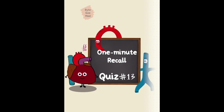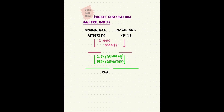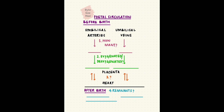This next one is on fetal blood vessels. During fetal life, there are umbilical arteries and veins. Your task is to recall how many umbilical arteries there are and how many umbilical veins, whether they carry oxygenated or deoxygenated blood, whether they go towards or away from the heart, and what they become after birth. Pause the video here and take as much time as you need.